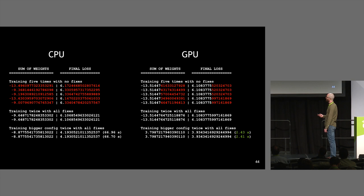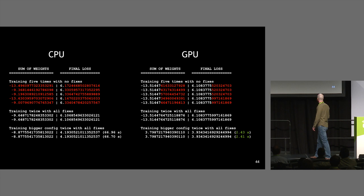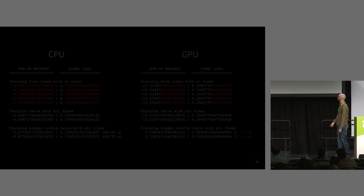Looking at the output comparing CPU versus GPU: on the CPU, all digits of the sum of weights at end of training are varying on each run, and the final loss value is mostly changing except the most significant digit. On the GPU, the variance is much less. For a bigger configuration run twice, the CPU took 67 seconds versus 2.4 seconds on the GPU — partly because CPU uses a single thread while GPU uses tens of thousands of threads — running deterministically.